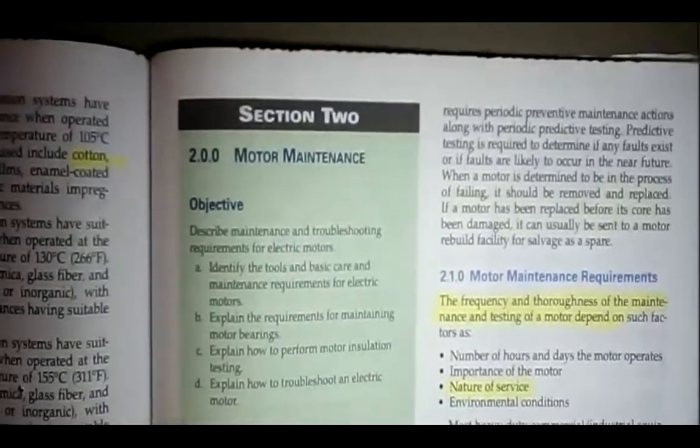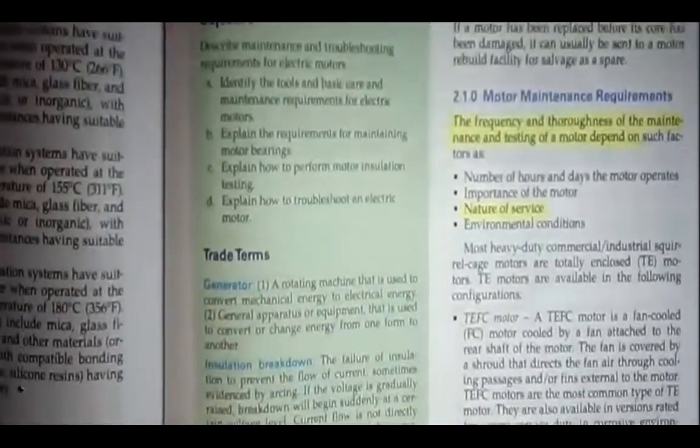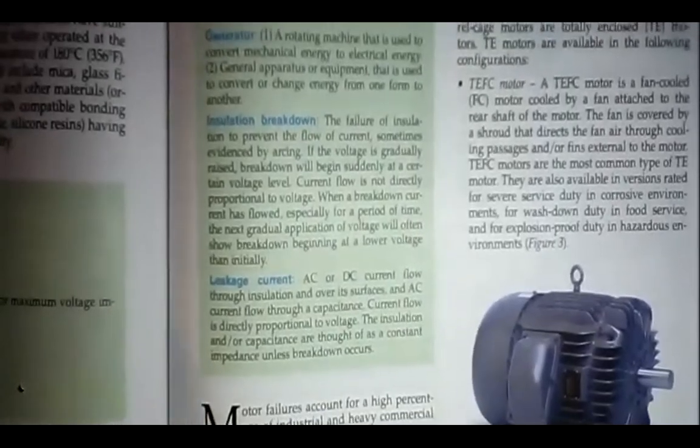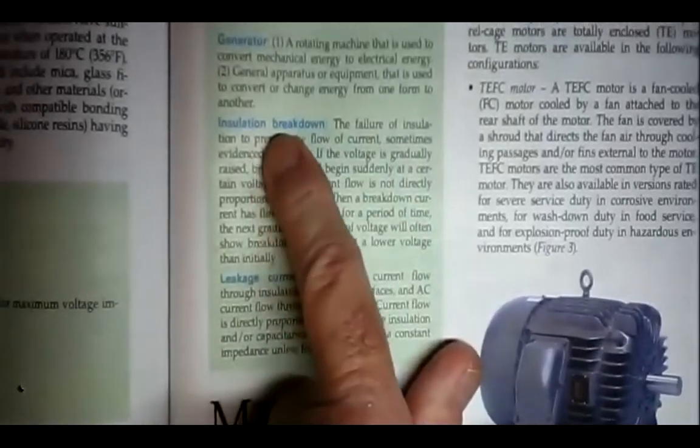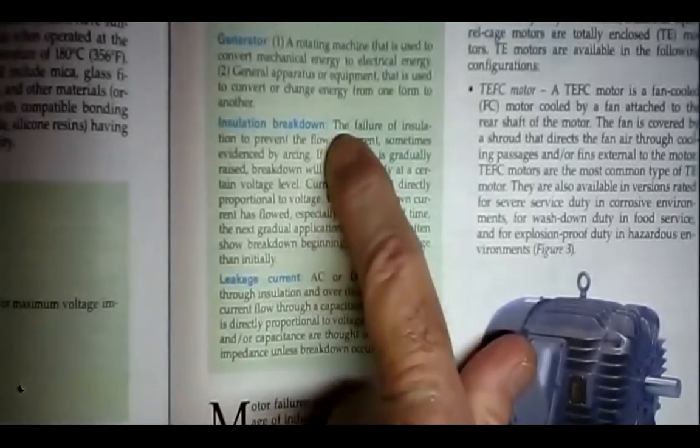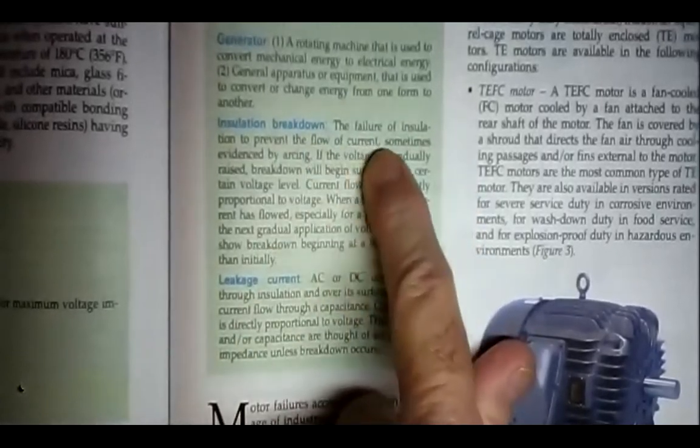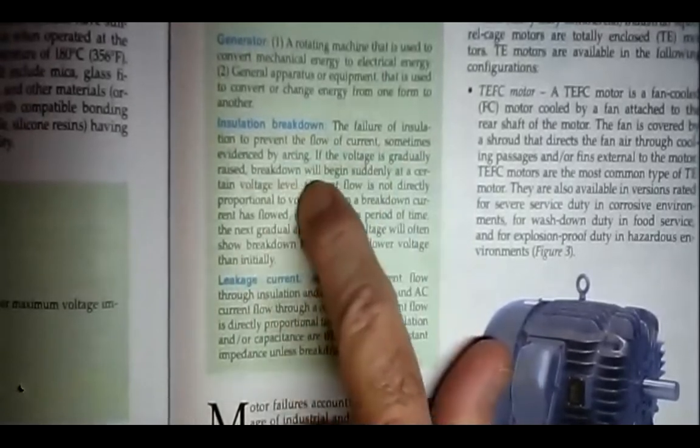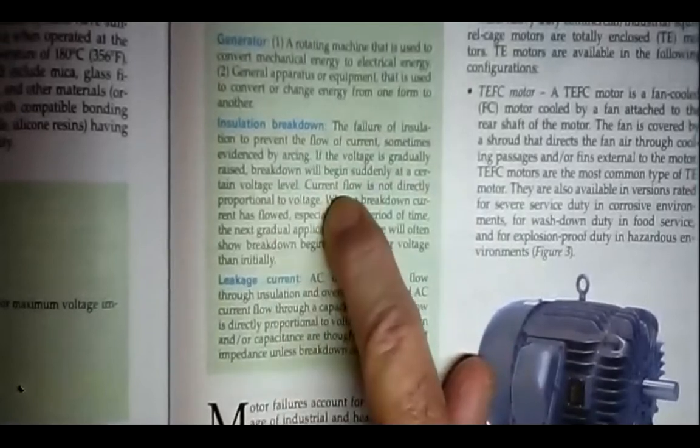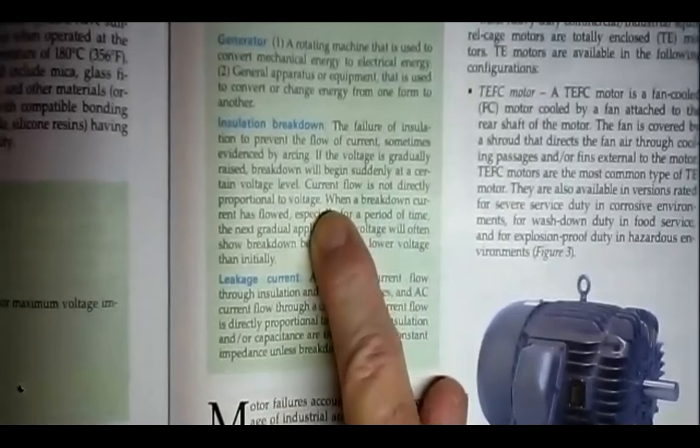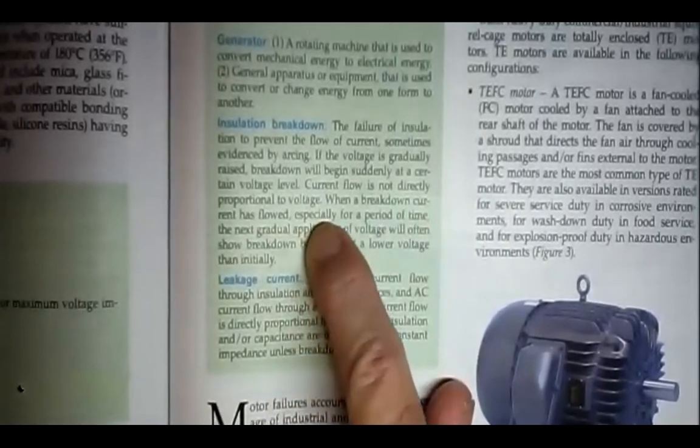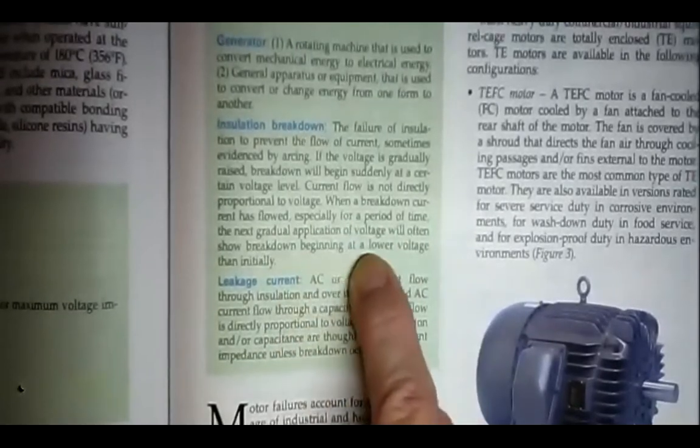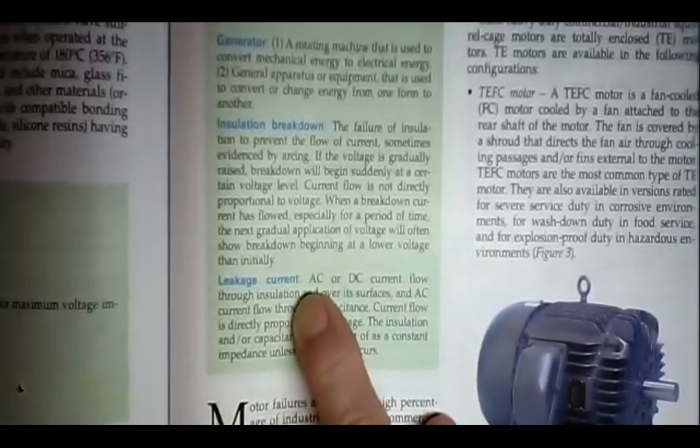Motor maintenance on page 7. Again, they have trade terms. You should stop at every section and read the trade terms. Insulation breakdown. I think that's a Led Zeppelin song. The failure of insulation to prevent the flow of current sometimes evidenced by arcing. The voltage is gradually raised. Breakdown will begin suddenly at a certain voltage level. Current flow is not directly proportional to voltage, or breakdown current has flowed, especially for a period of time. The next gradual application of voltage will often show breakdown beginning at a lower voltage than initially.